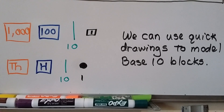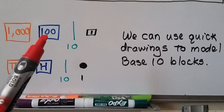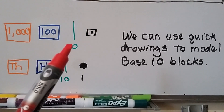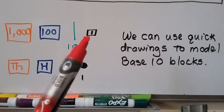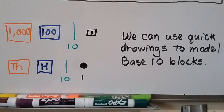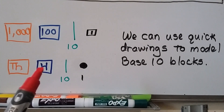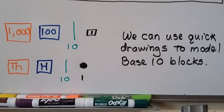When doing tests or homework, we can use quick drawings to model base 10 blocks. We make a square and write 'thousand' in it for the large orange cube, a square with '100' for a blue flat, a stick or line to represent a ten, and a little square with '1' or a dot for ones. We can also write TH for thousand, H for hundred, use a stick for ten, and a dot for ones.